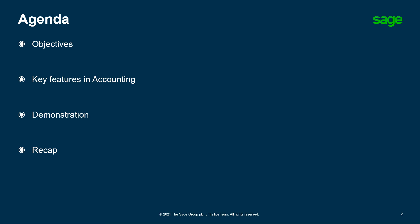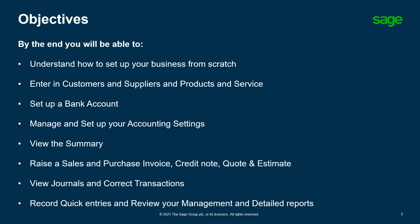In today's agenda we'll be covering off the objectives. I'll take you through the key features in accounting, a demonstration and then lastly a recap session of everything that we've gone through. Today's objectives: by the end of the session you'll be able to understand how to set up your business from scratch, entering customers and suppliers, products and services, set up a bank account, manage and set up your accounting settings, view the summary section, raise a sales and purchase invoice, credit note and look at the quotes and estimates area, view journals and correct transactions, record quick entries and review the management and detailed reports.